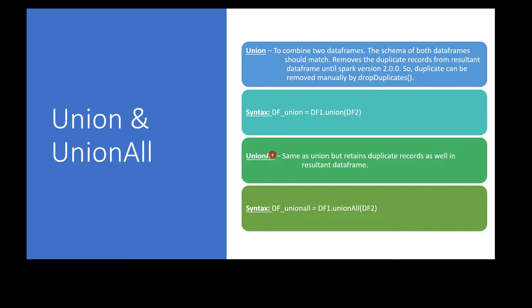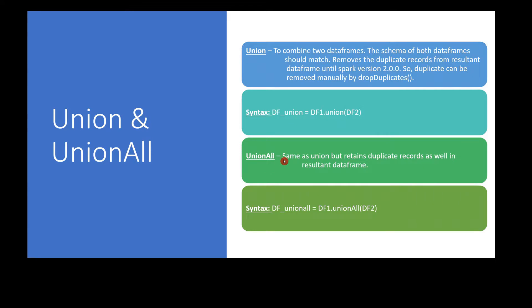Coming to union all — as I mentioned, it is similar to union but it would retain duplicates until Spark version 2.0.0. The syntax is similar to union: first we pass the first data frame, then the keyword unionAll(), then the second data frame as input. Union all would merge all the records from the two data frames and create the resultant data frame df_union_all.